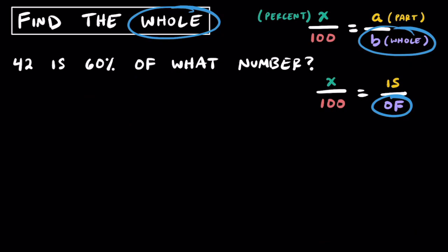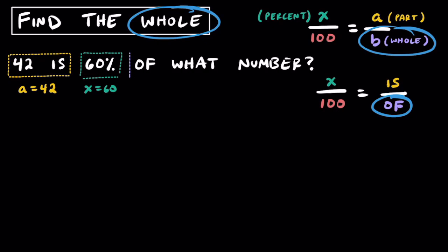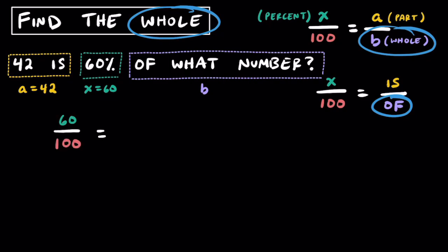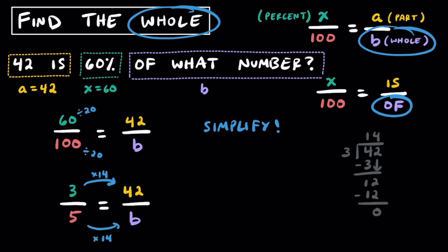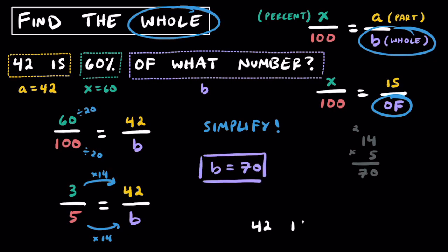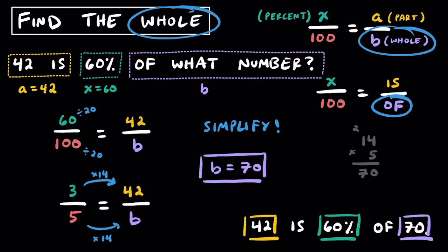Here's one last example: 42 is 60% of what number? Grouping '42 is' means a equals 42, 60% means x equals 60, and 'of what number' gives us b. Our proportion is 60 over 100 equals 42 over b. Simplifying the left ratio by their GCF gives 3 over 5 equals 42 over b. 42 divided by 3 equals 14, so 5 has to go into b 14 times as well. 14 times 5 equals 70, so b equals 70. Therefore, 42 is 60% of 70.